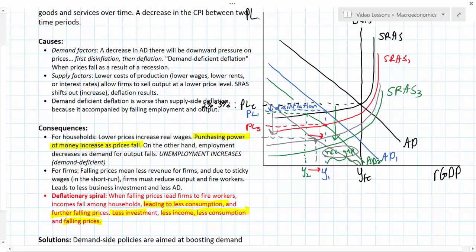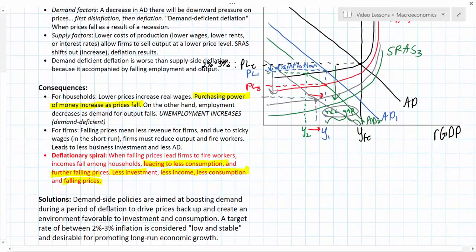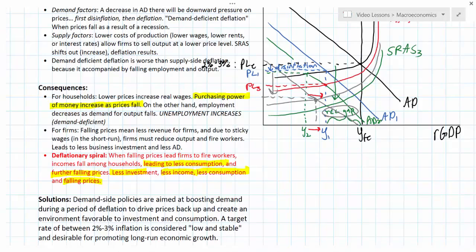So on one hand, as households see their real incomes rise, it creates an incentive for them not to consume as much as they would have if there were a low and stable rate of inflation. Firms hate deflation—it means lower prices, less revenue, and they have to cut their output, cut their employment, and lay off workers. Solutions include demand-side policies aimed at boosting aggregate demand during a recession, during a period of deflation, to try to drive the price level back up to a healthy rate of between 2-3% inflation.